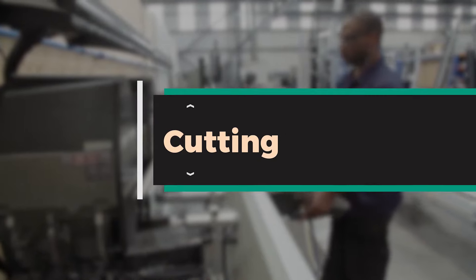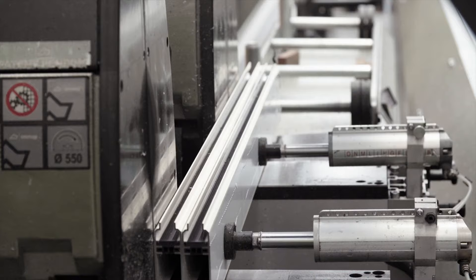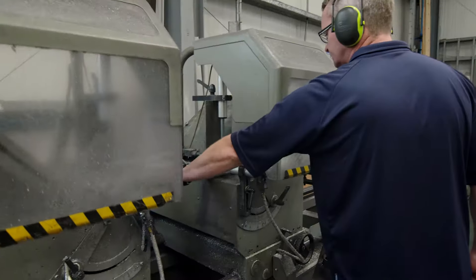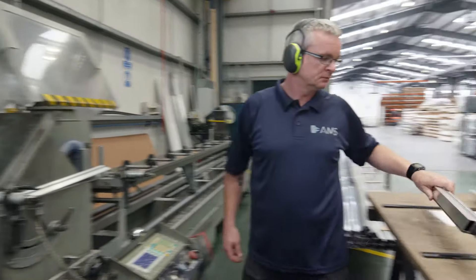Computerized saws allow for precision cutting, ranging in size from 4 millimetres up to 8 metres. Digital measuring and QC checks ensure that the tight cutting tolerances are met and recorded at the time of processing the order.